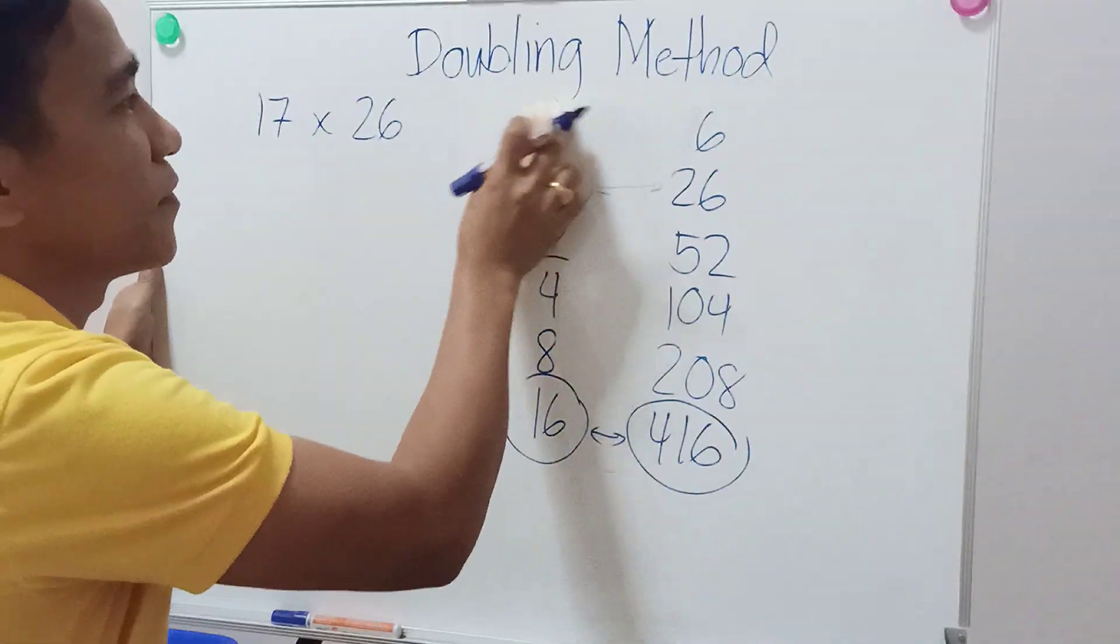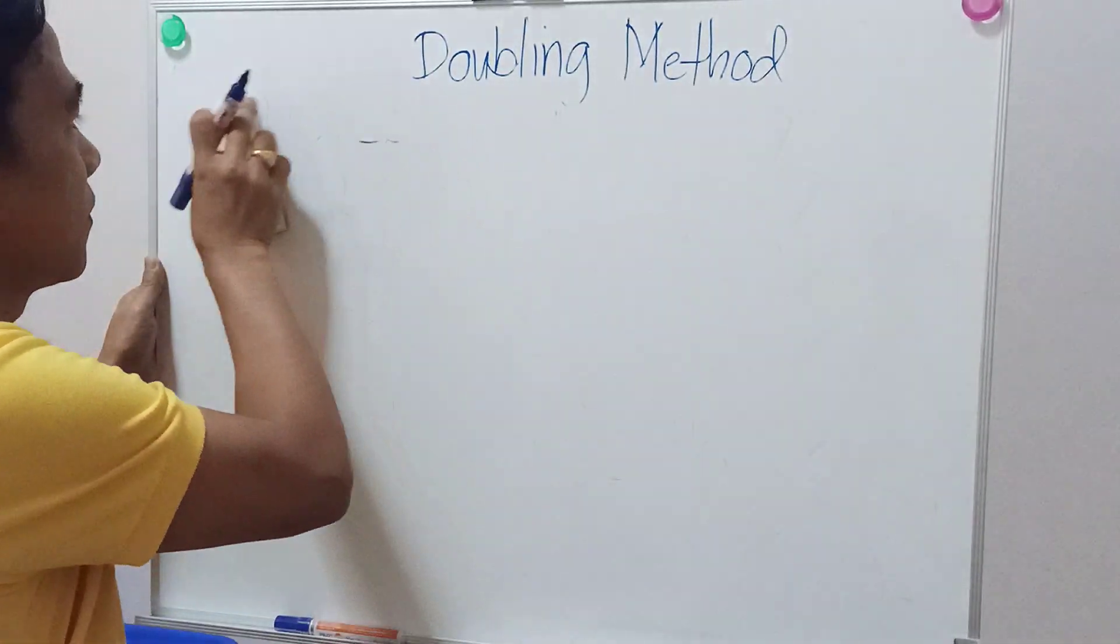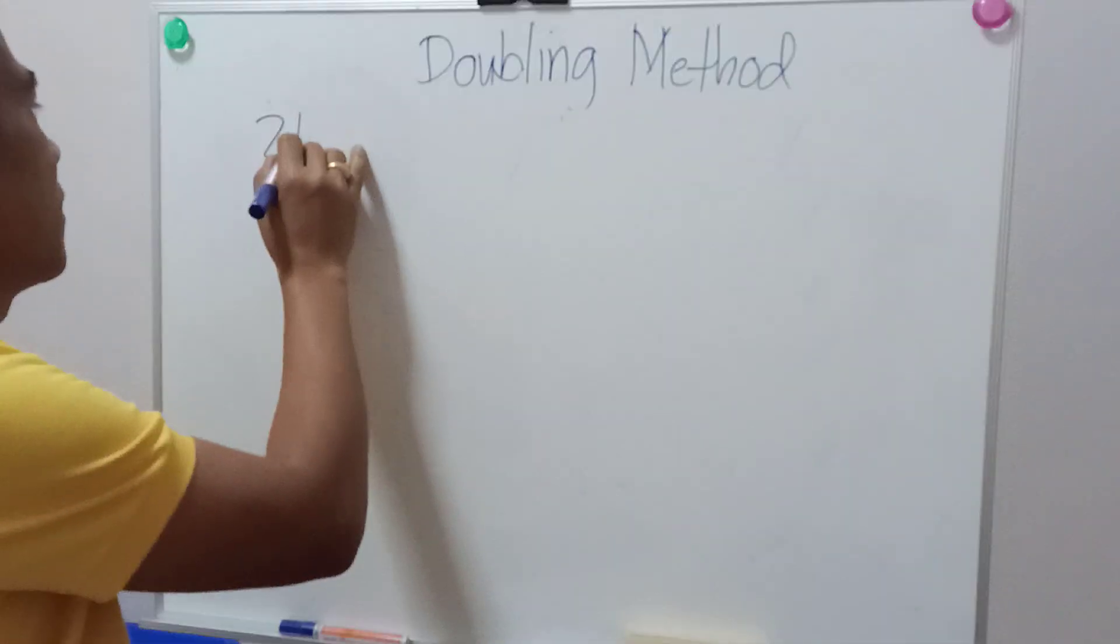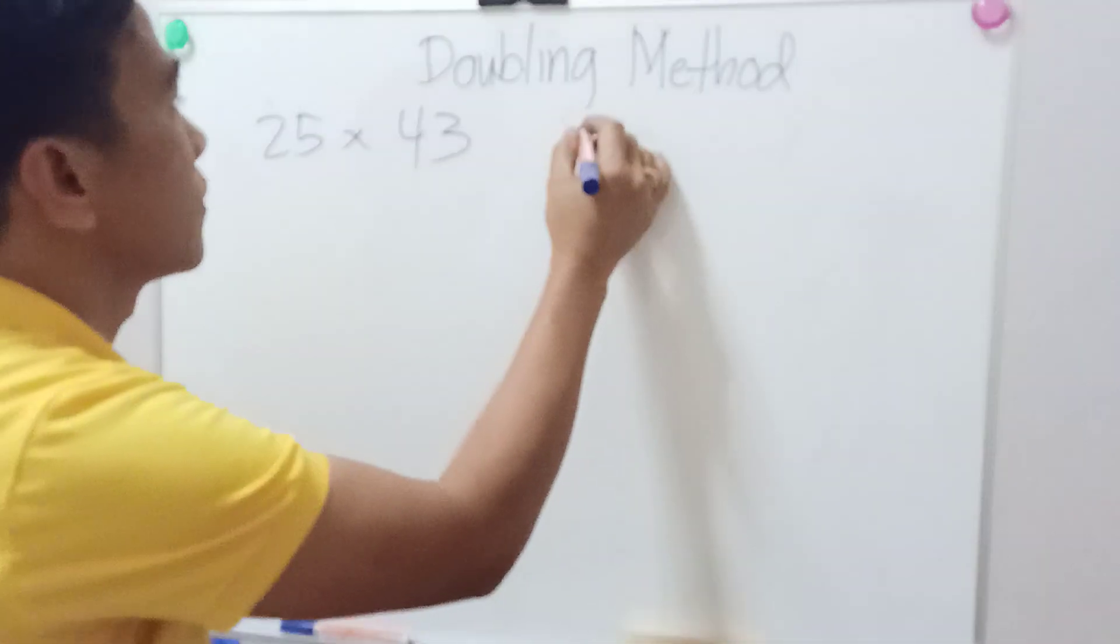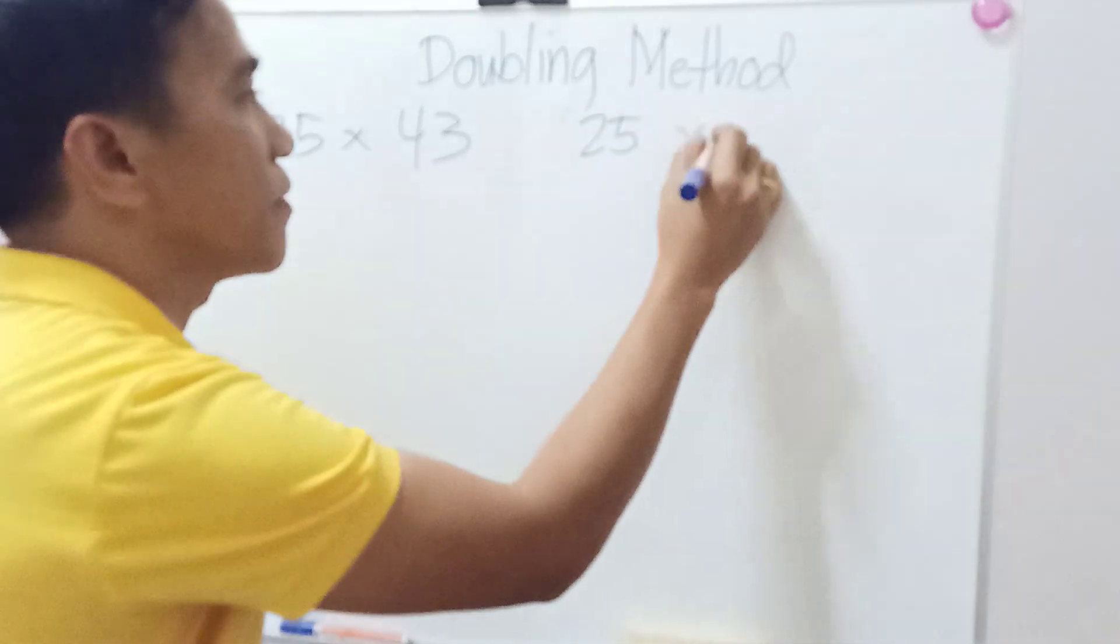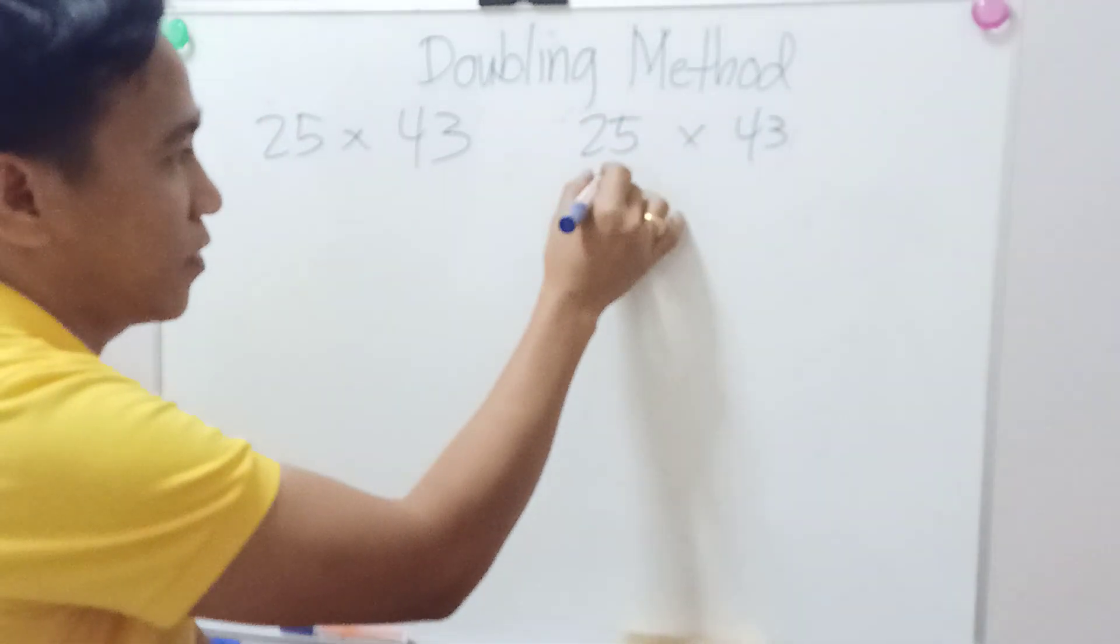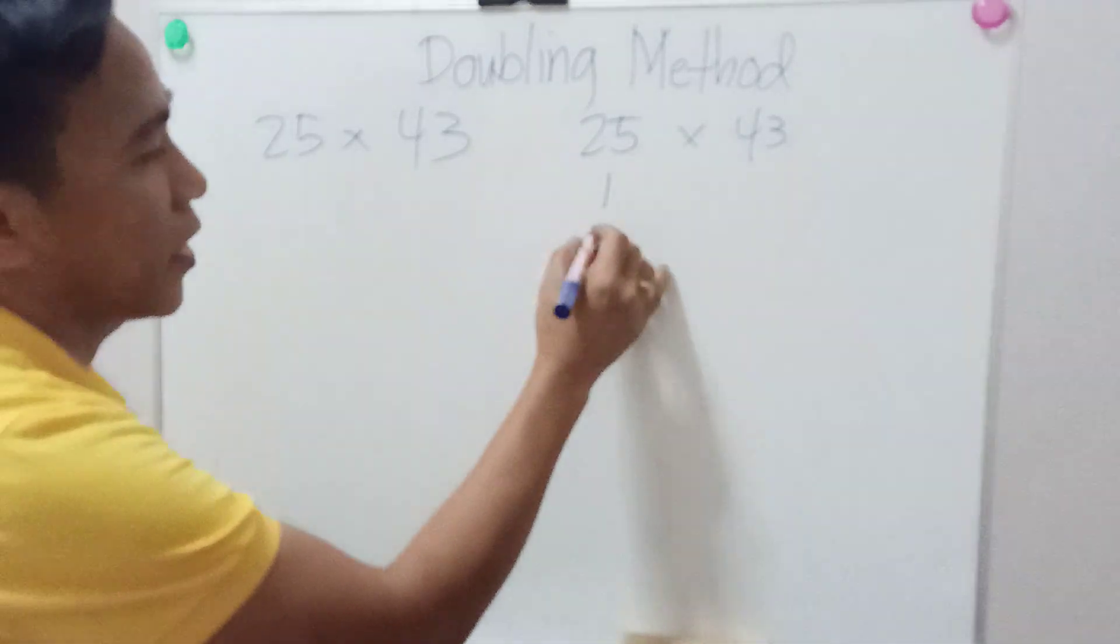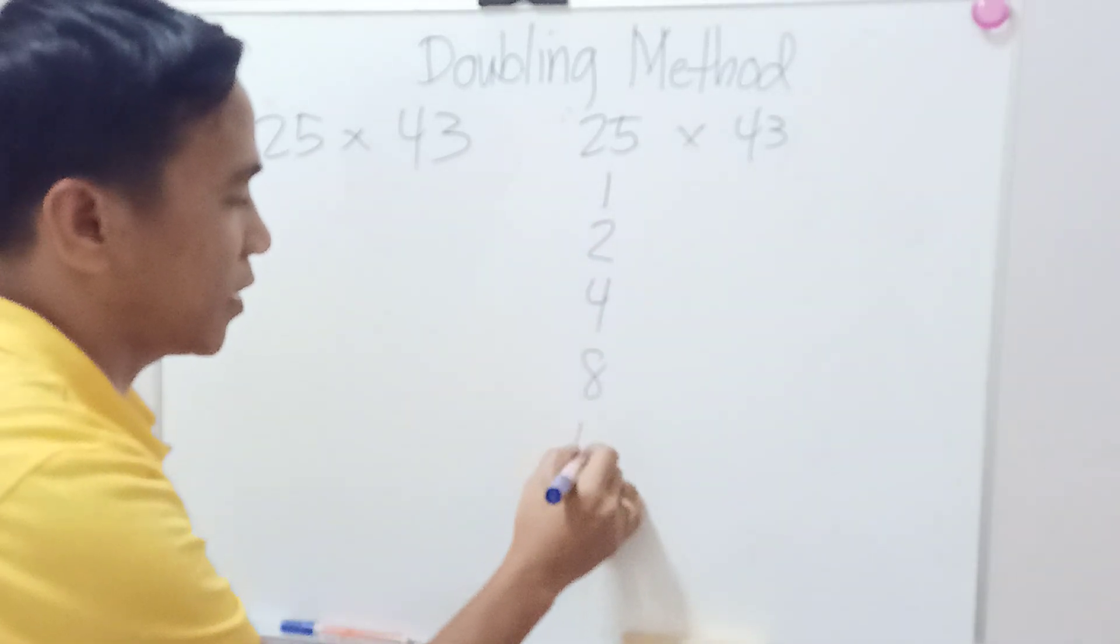Let's take another example. Let's say 25 times 43. Again, you start at 1, then make it double: 2, 4, 8, 16.